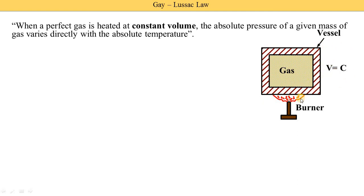When we start to supply heat energy to this gas by using a burner, its pressure and temperature are changed — and the pressure and temperature change directly proportionally. Both are increased. So when we supply heat energy, both are increased: pressure is increased and temperature is increased.